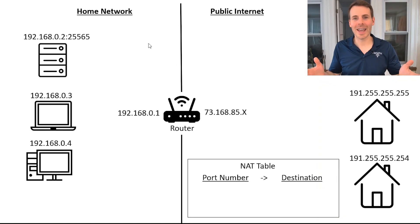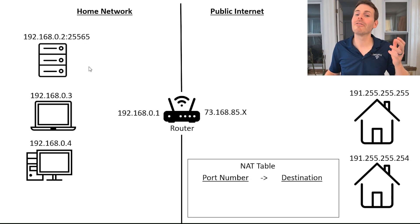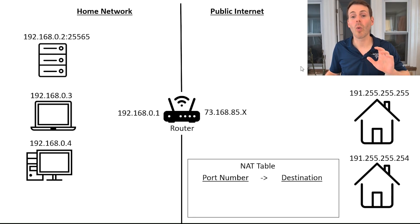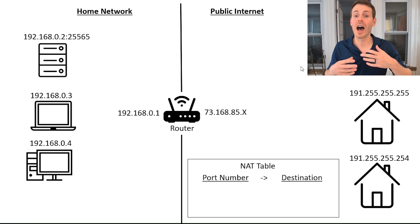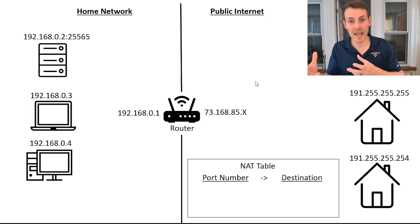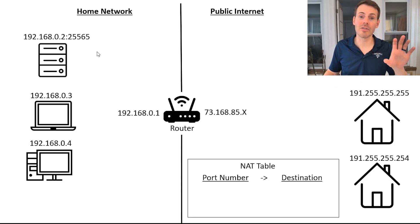In order to understand the specifics of how port forwarding works, let's take a look at an example. Here's a simplified example of a home network. On the left-hand side, you have the devices in your home network. For this example, let's say this right here is a server and we want to host Minecraft games on it. In order to make this publicly accessible by friends who are remotely located, we need to implement port forwarding. Also important: your router in the center has both a private IP address and a public IP address, serving as the middleman for communication between the public internet and the devices in your home network.